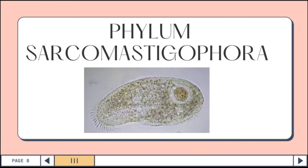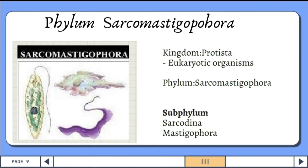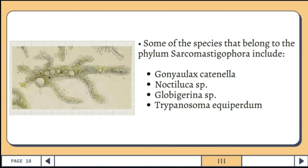Phylum Sarcomastigophora from the Kingdom Protista are eukaryotic organisms. The subphyla are Sarcodina and Mastigophora. Some of the species that belong to phylum Sarcomastigophora include Gonyolax cateniella, Noctiluca species, Globigerina species, and Trypanosoma equiperidum.